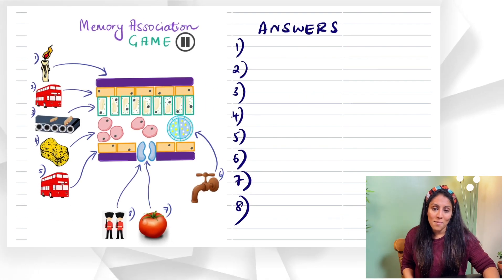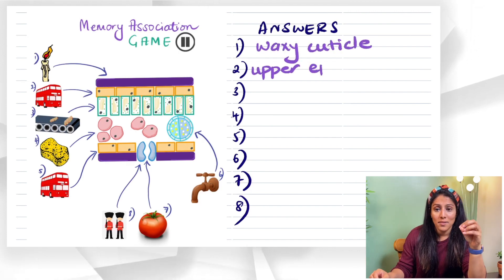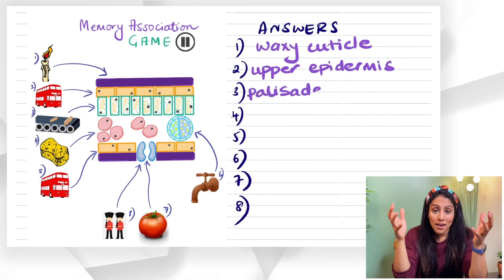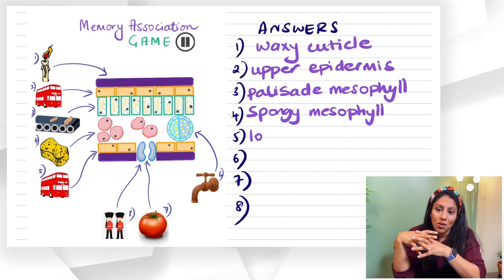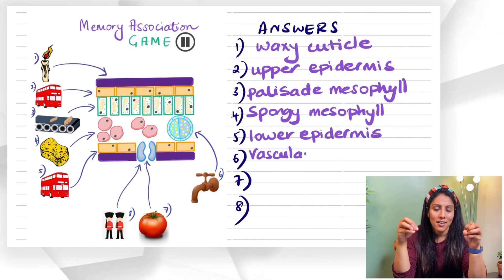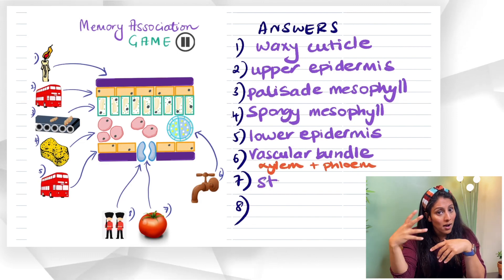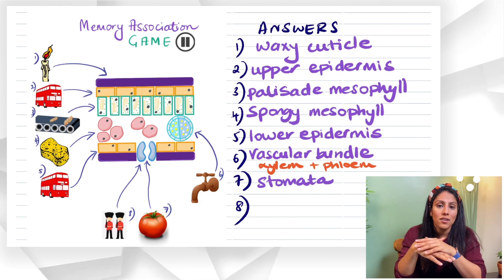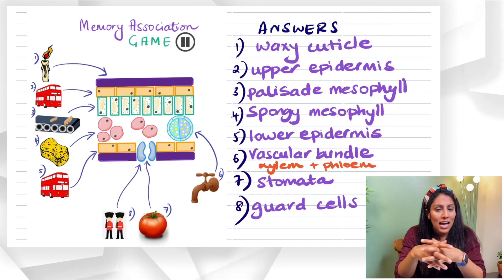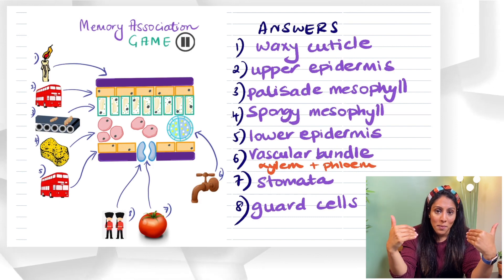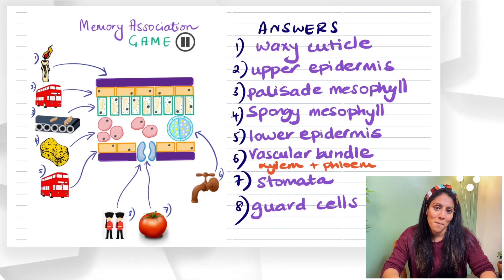Here are the answers: number 1 is waxy cuticle, 2 is upper epidermis, 3 is palisade mesophyll, 4 is spongy mesophyll, 5 is lower epidermis, 6 is vascular bundle made up of xylem and phloem, 7 is stomata — the pores found underneath the leaf — and 8 is guard cells. Give yourself a mark out of 8, and if you got top marks, give yourself a pat on the back. If not, that's fine — rewind the video and watch it again until you get full marks.